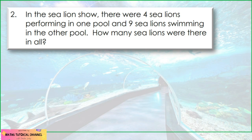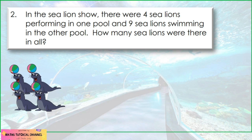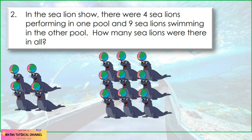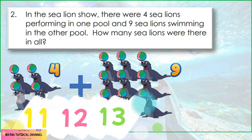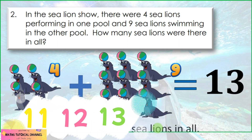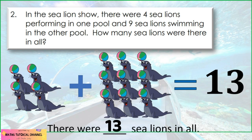In the sea lion show, there were four sea lions performing in one pool and nine sea lions swimming in the other pool. How many sea lions were there in all? Four plus nine is equal to — choose your answer. The answer is 13. Good job! There were 13 sea lions in all.